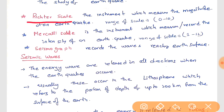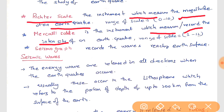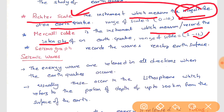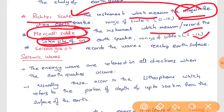Richter scale is the instrument which measures the magnitude of the earthquake, and the scale ranges from 0 to 10. Mercalli scale is the instrument which measures or records the intensity of an earthquake, and the scale ranges from 1 to 12. So the scale used to measure magnitude is the Richter scale, and intensity is the Mercalli scale.